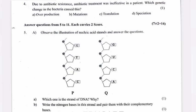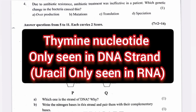Question 5: Observe the illustrations of nucleic acid strands and answer the questions. Part a: Which one is the strand of DNA and why? Answer: Thymine nucleotide is only seen in the DNA strand.